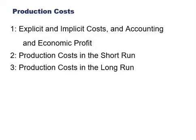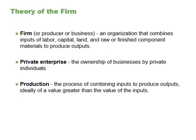Hello and welcome to How to Econ. Today we will talk about production costs. This chapter is the first of four chapters that explores the theory of the firm. This theory explains how firms behave. We will talk about explicit and implicit costs and accounting and economic profits. Then we will talk about production costs in the short run and in the long run.